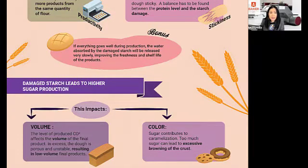a balance needs to be found between the protein level and the starch damage. If everything goes well, you're going to have a product that actually has a better shelf life and is fresher over a longer period of time. Basically, damaged starch leads to higher sugar production, which will help with your volume and your color as well.